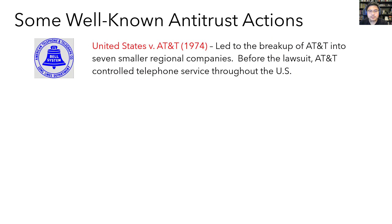One of the most well-known modern examples of antitrust policy in practice is the breakup of AT&T Bell into seven smaller regional companies known as the Baby Bells. Before the lawsuit, the Bell Telephone Company controlled almost the entire market for telephone service across the United States, and they were partly able to do this by using their size to bully people into only buying Bell Telephone Equipment, so their monopoly on the network was also letting them monopolize the telephone equipment industry. The Department of Justice sued, and eventually they reached an agreement to break up the monopoly.